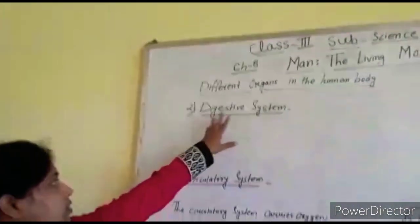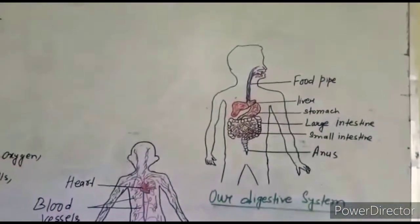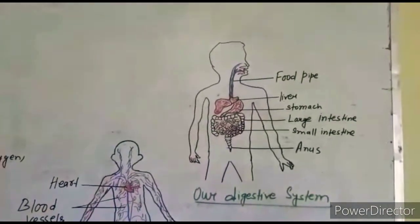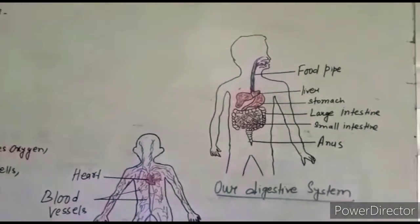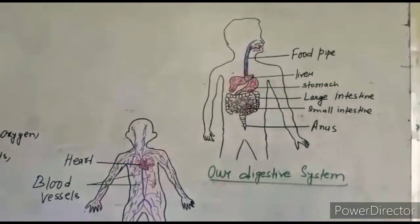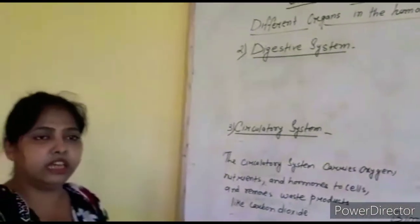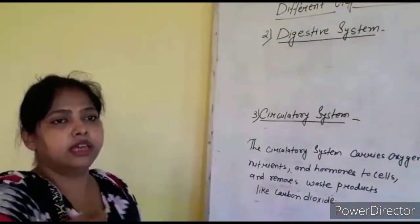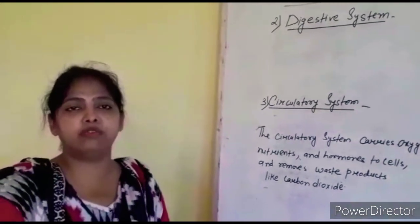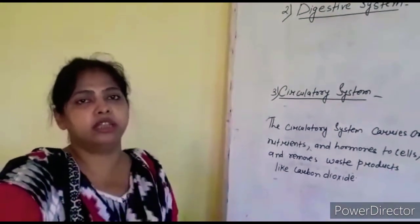Today I am going to explain about the digestive system. I have just drawn a diagram of the digestive system. When we eat or smell food, digestion actually starts from there. What do you mean by digestion? Digestion means when we eat food, the food is broken down into a simpler form, with the help of digestive fluid produced by our body.